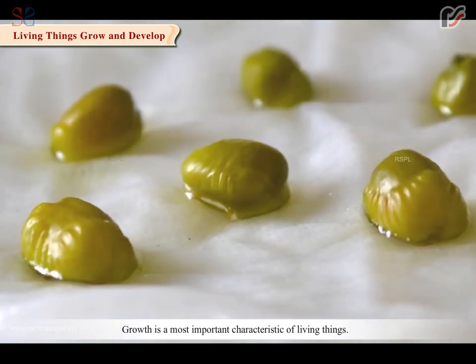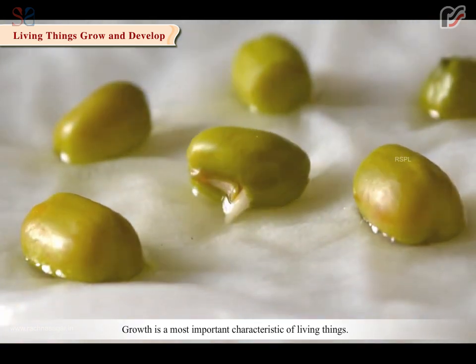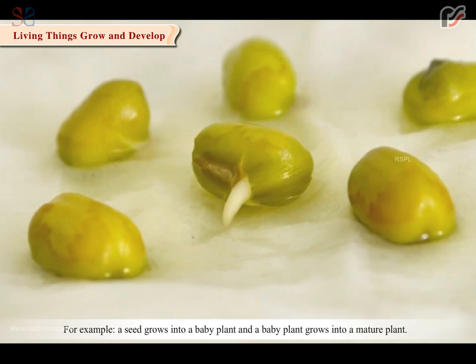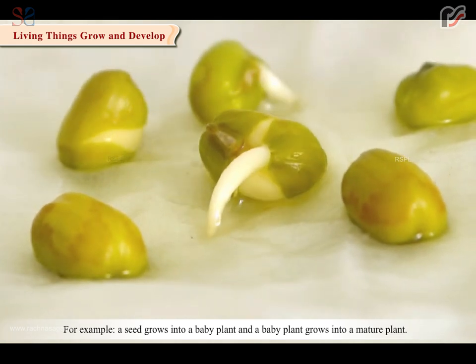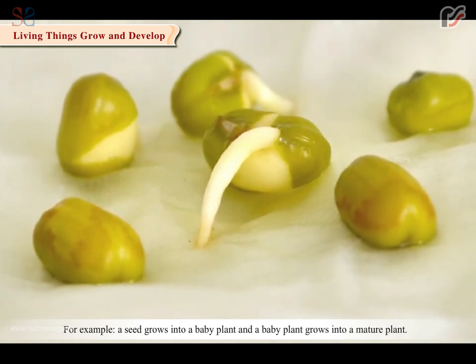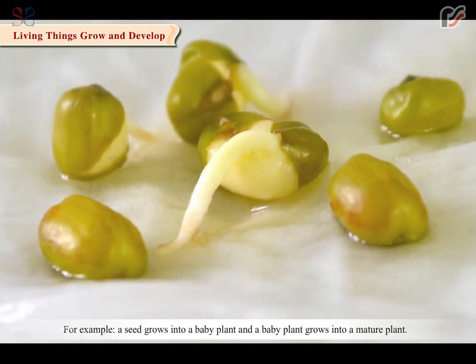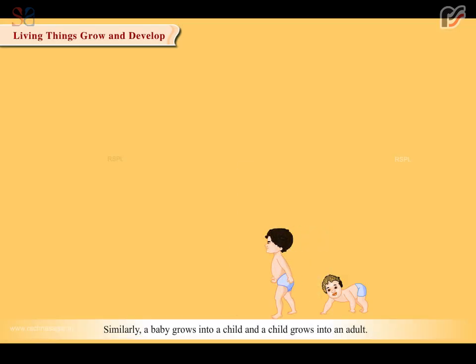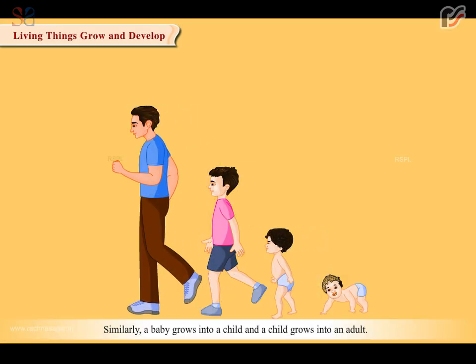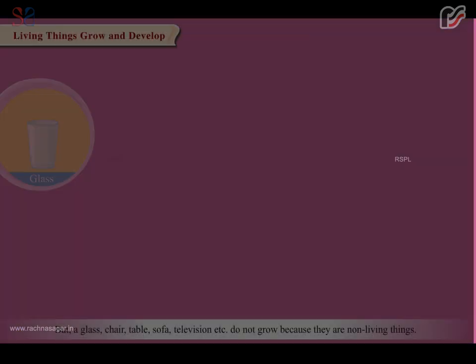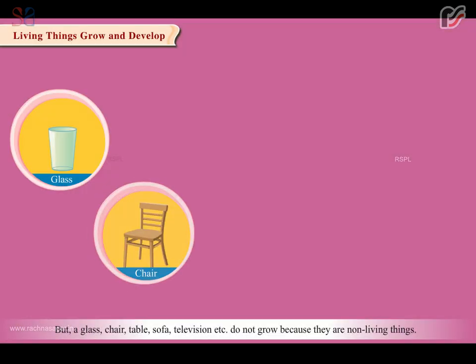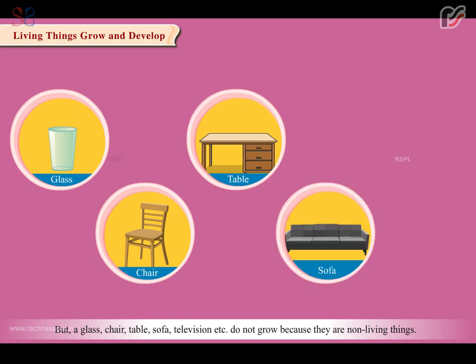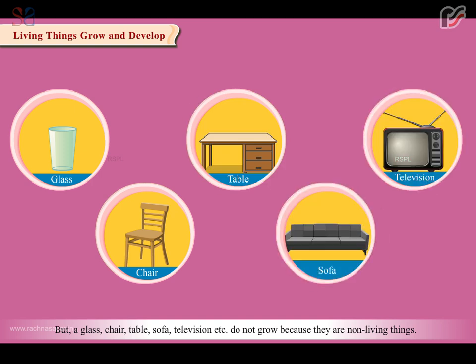Growth is the most important characteristic of living things. For example, a seed grows into a baby plant and a baby plant grows into a mature plant. Similarly, a baby grows into a child and a child grows into an adult. But a glass, chair, table, sofa, television etc. do not grow because they are non-living things.